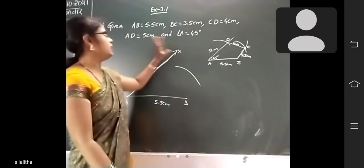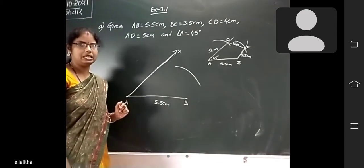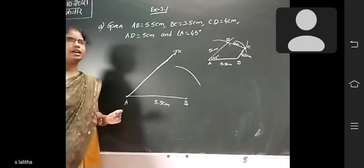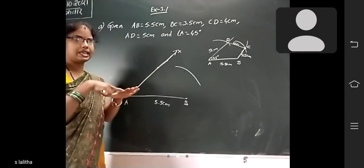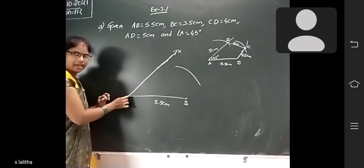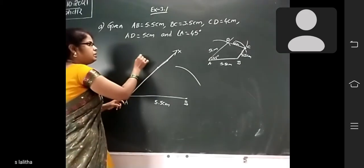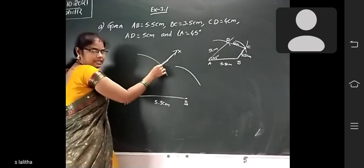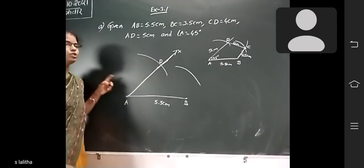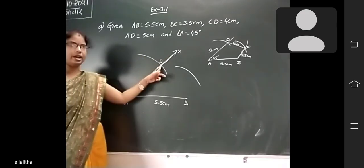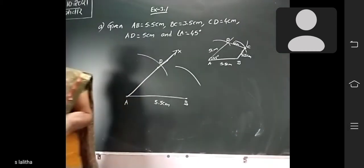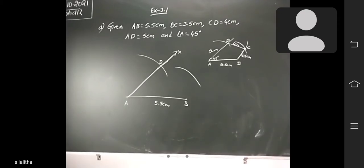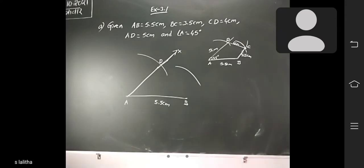For angle A, the ray AX is completed. Now AD = 5 cm. Take your compass — all of you — and measure 5 cm on the scale. Now keep the compass on A and draw an arc of 5 cm. Where this ray AX and this arc intersect, that point is D.